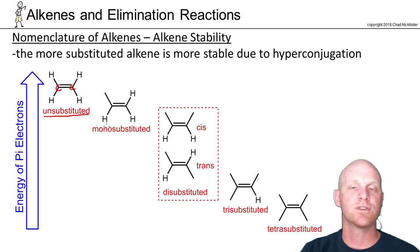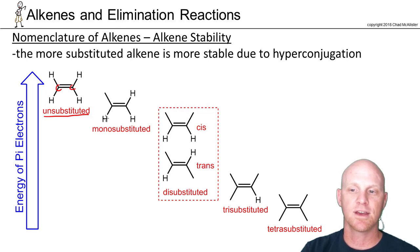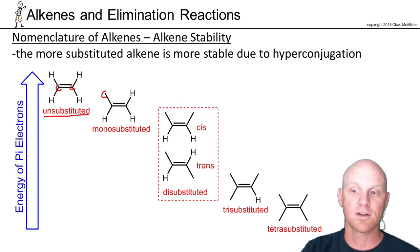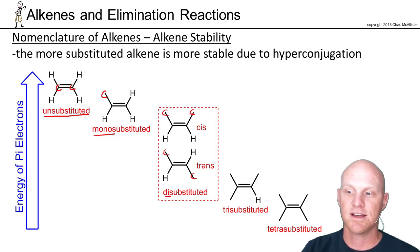As I start replacing hydrogens with carbon chains — and it doesn't matter if they're methyl, ethyl, propyl, whatever — just as I start replacing each of those four hydrogens sequentially with carbon chains. So here, one out of four positions being carbon, we call that monosubstituted. If two out of the four positions are carbon chains, we'll call that disubstituted, and we'll see that you can have both cis and trans.